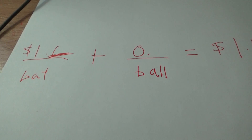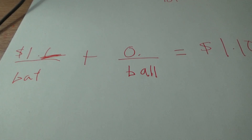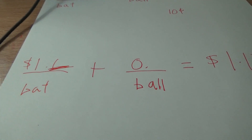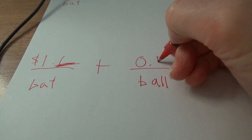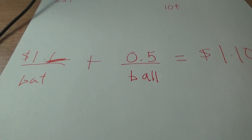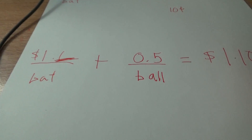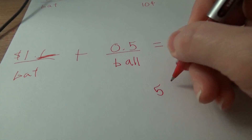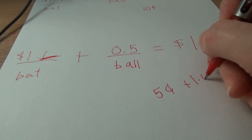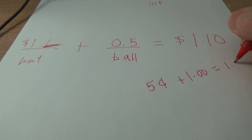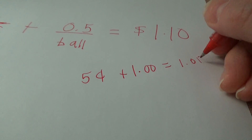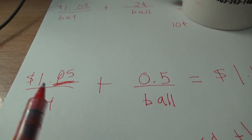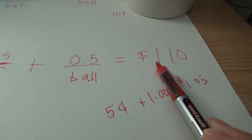The answer is five cents. Let's verify: if the ball is five cents, and the bat is a dollar more than the ball, then five cents plus a dollar more is a dollar five. A dollar five plus five cents equals a dollar ten. So this is the answer.